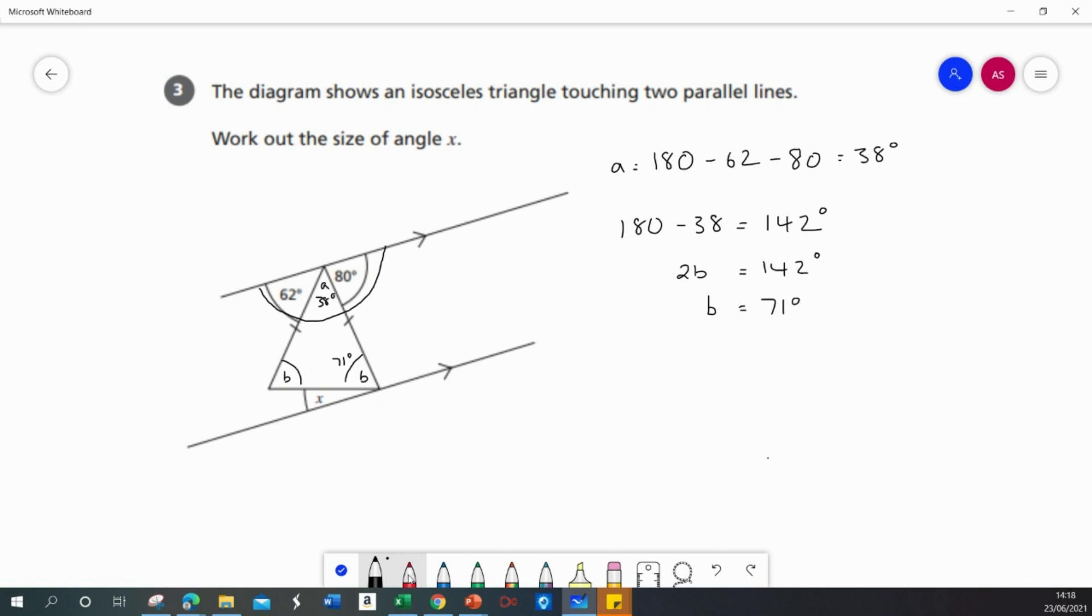So I'm now going to use one of my parallel line rules and I can see that we've got an alternate angle here. So angle x plus angle B must be the same as 80 degrees. So this angle here, 80 degrees, will equal the same as this angle here.